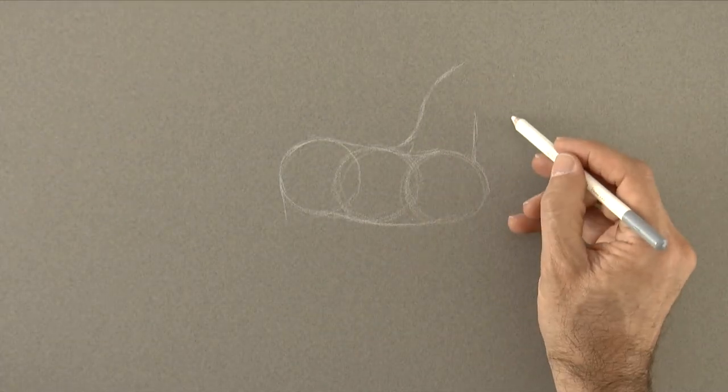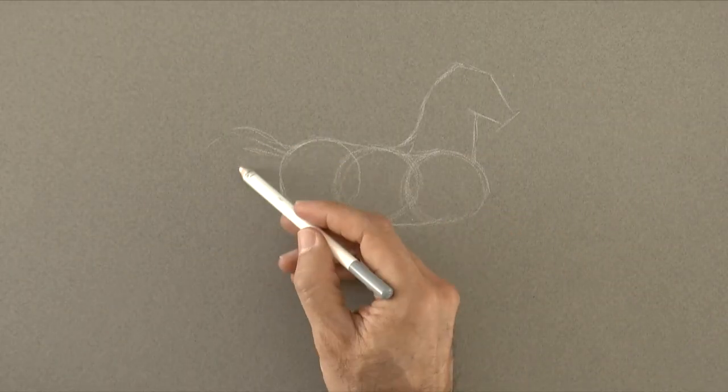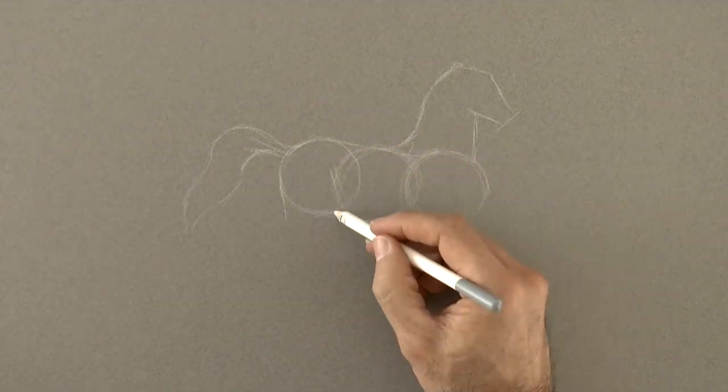And here will go the head. First we sketch it with a more or less triangular shape. The tail will go over here and then we do the hind leg.